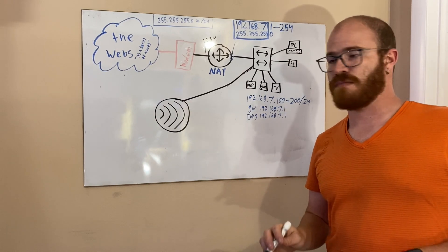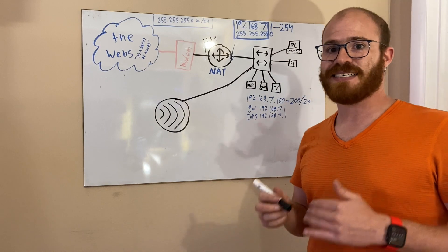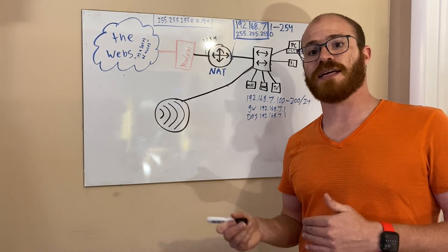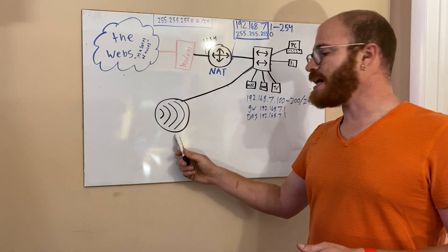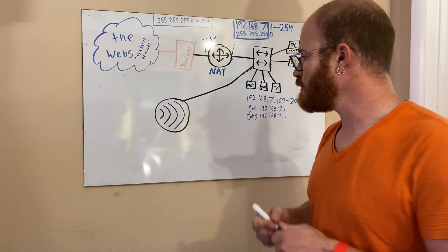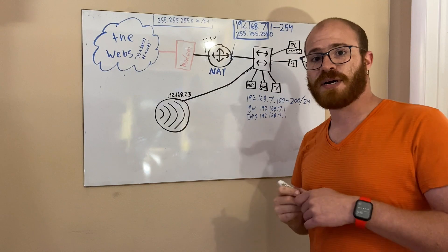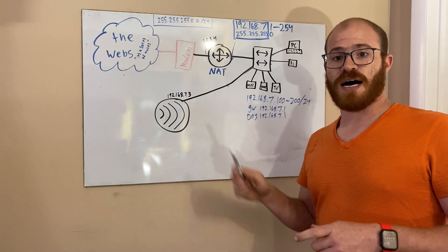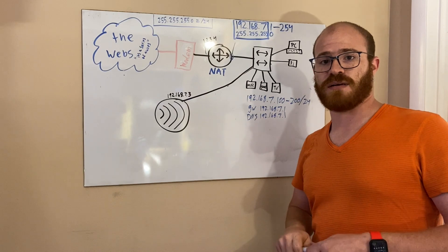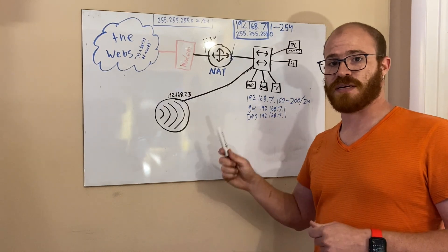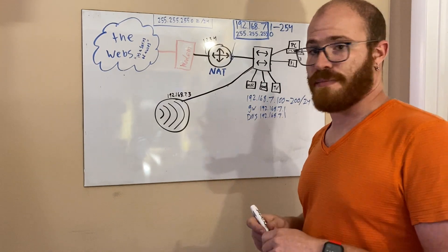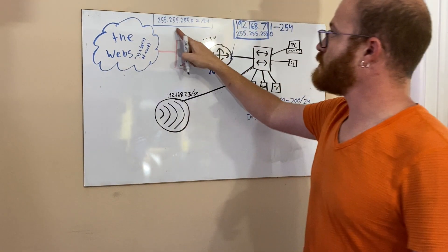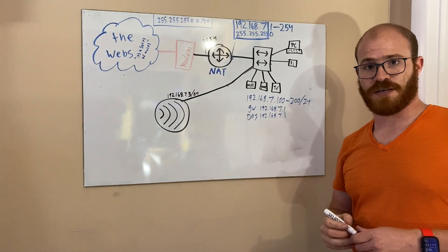First of all, the wireless access point is a device itself on the network. Because we have to control it, configure it, and it needs to talk on the network, the access point itself gets an IP address. Remember how I said earlier that I assigned my networking devices between two and nine? I've assigned here my wireless access point 192.168.7.3. My bad. With a subnet mask of 24 bits. 255.255.255.0.